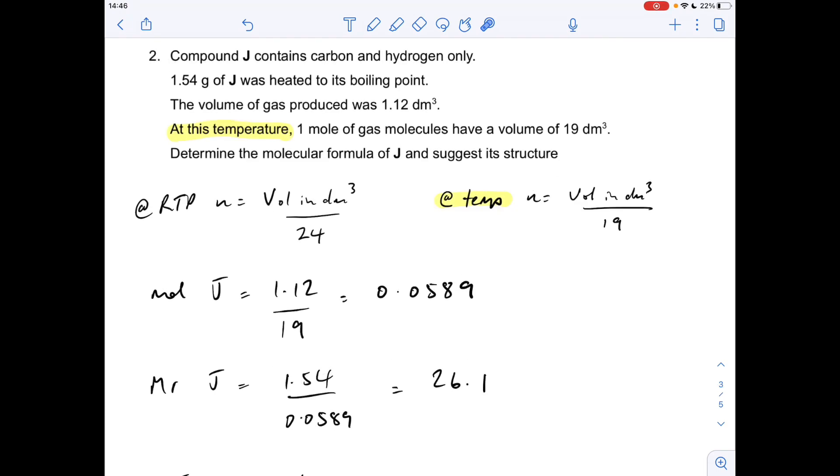Okay, so number two now, compound J is carbon and hydrogen only. We've got the mass of J heated to its boiling point, so it obviously vaporizes, and the volume of gas produced at 1.12 dm cubed. The thing to bear in mind is we're not at RTP here, we're at whatever the boiling point is. So one mole of gas isn't going to occupy 24 dm cubed, we're told it occupies 19 dm cubed. We've got to come up with the formula and the structure for J.